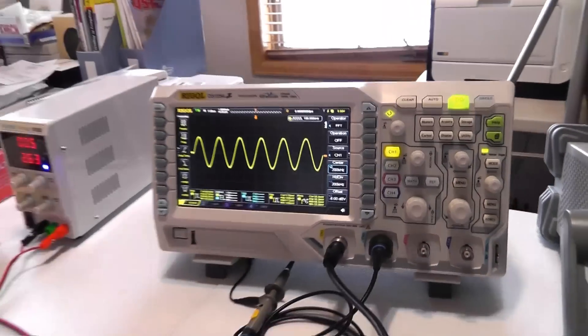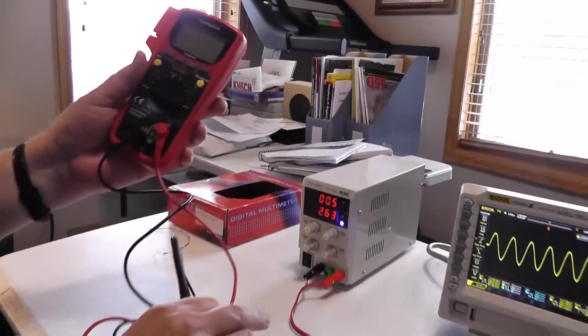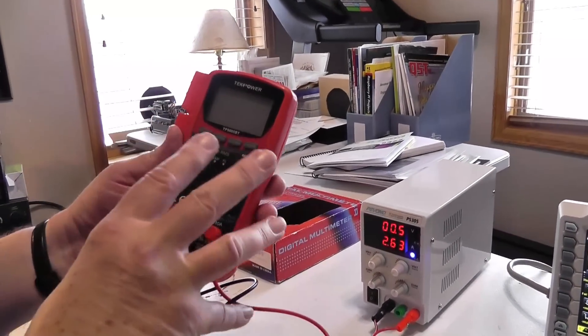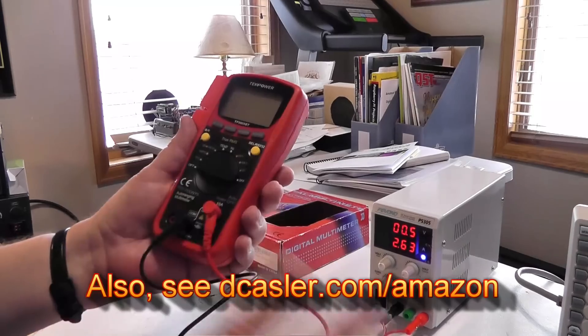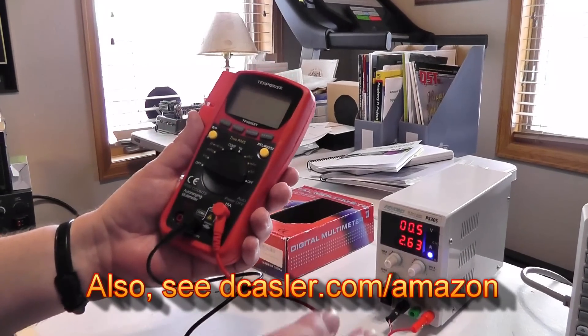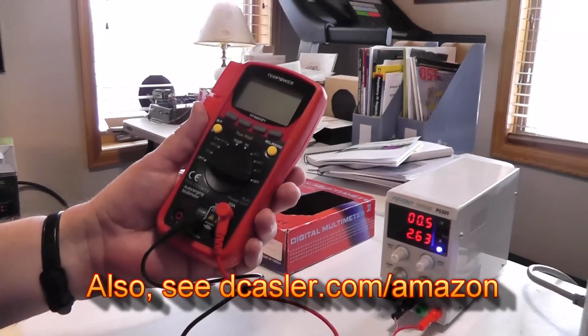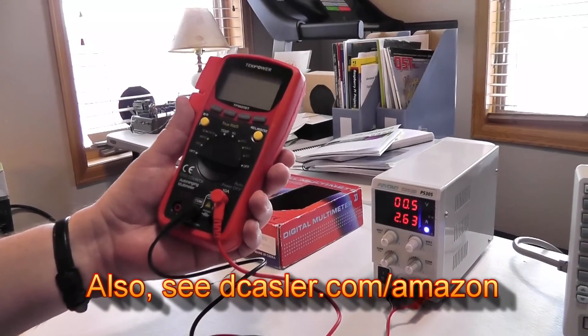So the test equipment that we have looked at today has started with the multimeter. I recommend everyone get one. I'll put a link for all of these up on the text right underneath the video. If you use those links, then you get the ordinary price, the normal price, but I get a little bit of a finder's fee. So it's a great way to support ham radio answers.